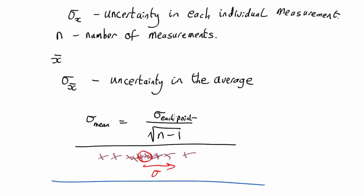For this to work, every measurement has to be independent. That means that the uncertainty in one measurement is unrelated to the uncertainty in the next measurement.